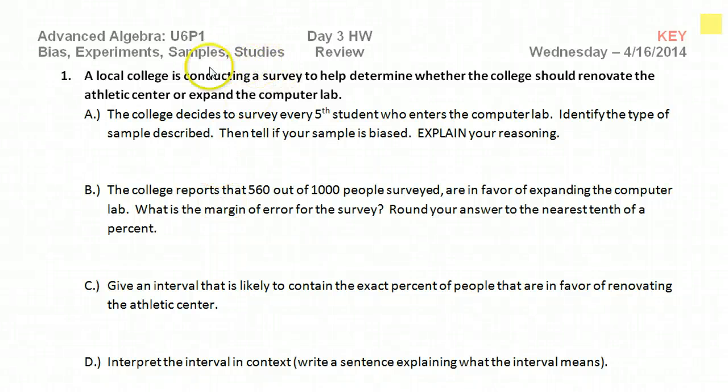This lesson is a review of what we've learned so far about bias and samples, the different types of samples like voluntary, convenience, simple random, stratified random, cluster sampling, all that kind of stuff. Also, margin of error and knowing whether something is an experiment or an observational study.